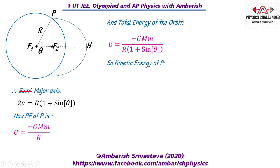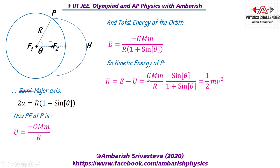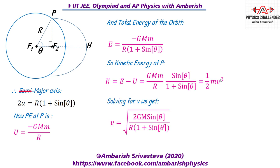Now the kinetic energy equals total energy minus potential energy: KE = E − U. Subtracting the potential energy from the total energy and setting KE = ½mv², then canceling m from both sides and solving for v, we get the final answer: v = √[2GM sinθ / (R(1 + sinθ))].